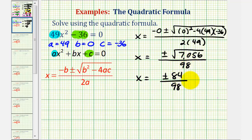And this fraction does simplify. 84 is equal to six times 14, and 98 is equal to seven times 14. Well, of course, 14 over 14 simplifies to one, so we have x equals plus or minus six-sevenths.